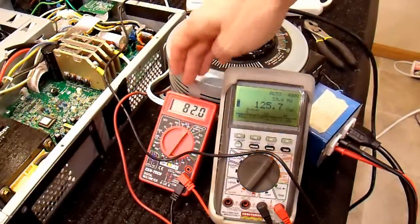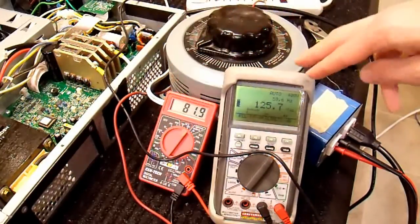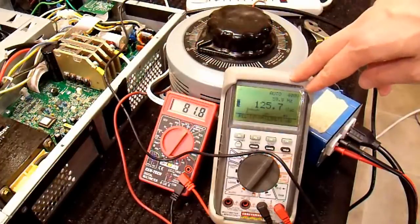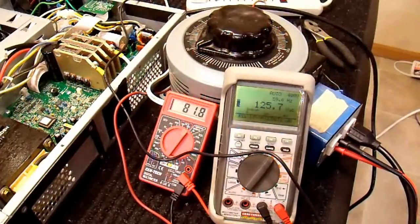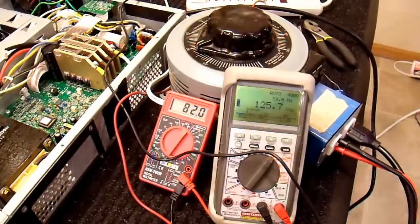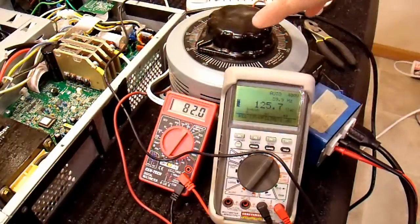So at this point, my input voltage is 82 volts. And you can see that the voltage between one phase of the wall and the output of the UPS is nice and stable. It's still at about 125 volts.